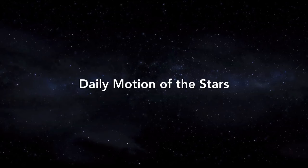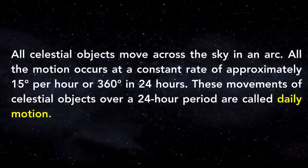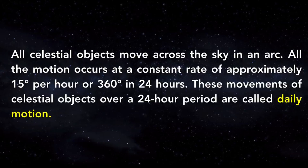Let's start with stars. The daily motion of stars would be across the sky in an arc — an arc is a circular shape. This motion occurs at a constant rate of approximately 15 degrees an hour, or 360 degrees in 24 hours. Any movement in this pattern is called daily motion.